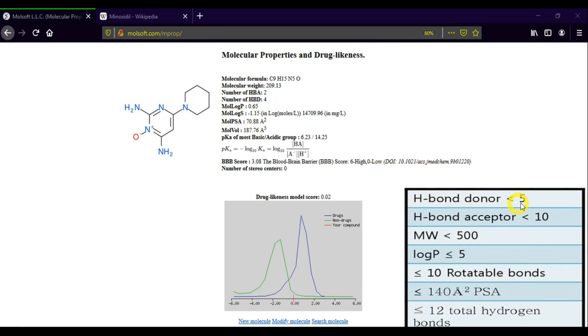Now we can compare the data with these two rules. The hydrogen bond donor is less than five. Here you can see the hydrogen bond donor is four. And the number of hydrogen bond acceptors is less than ten. Here you can see the number of hydrogen bonding acceptors is two. And the molecular weight is less than 500. And the molecular weight of minoxidil is 209. And the log P value is less than or equal to five. Here you can see the log P value of minoxidil is 0.65. And the polar surface area is less than or equal to 140. Here you can find the polar surface area of minoxidil is 70. And here you can see the drug likeness model score is 0.02, that is greater than zero.